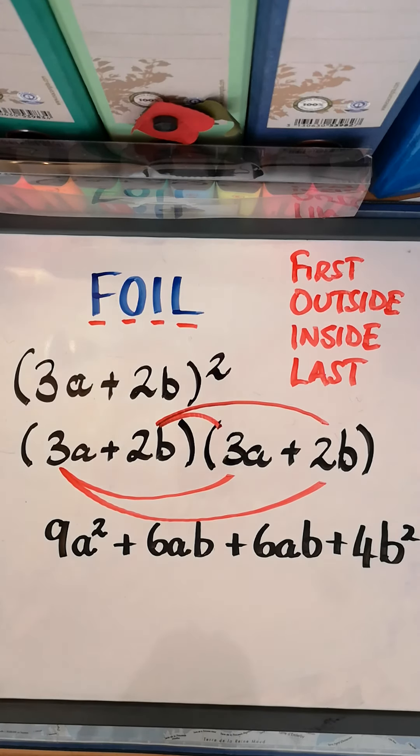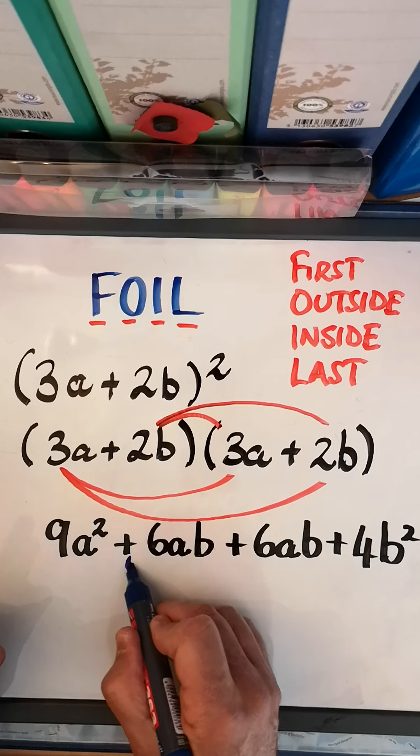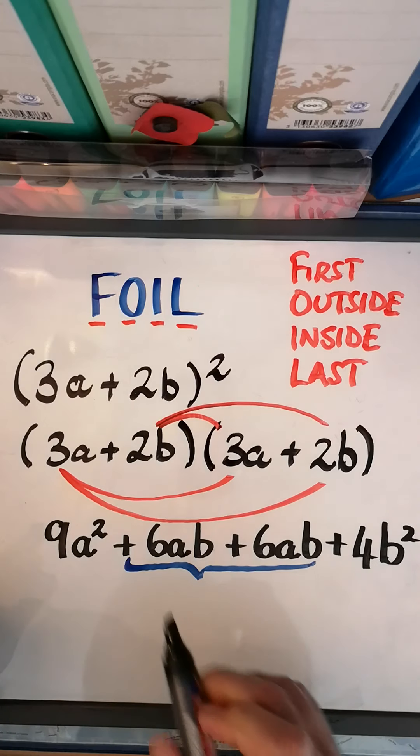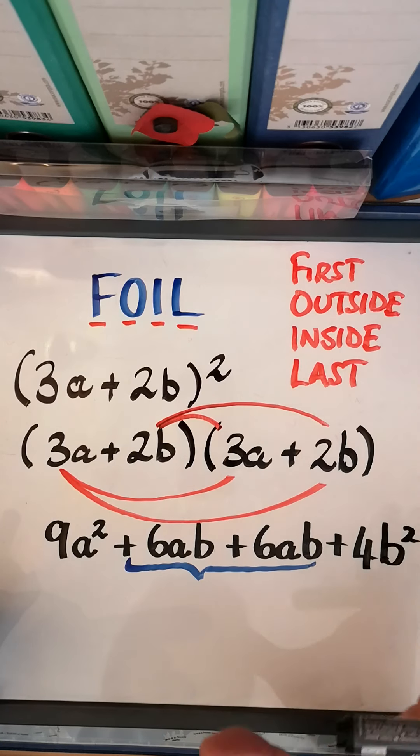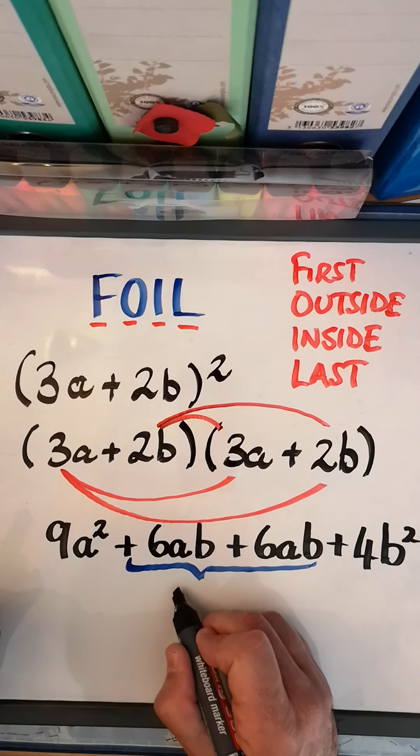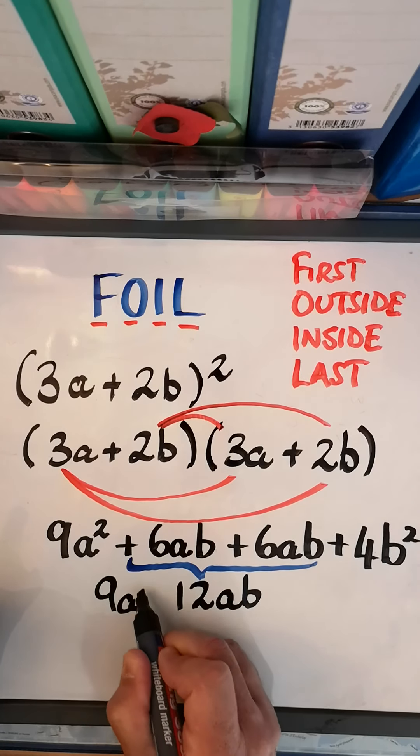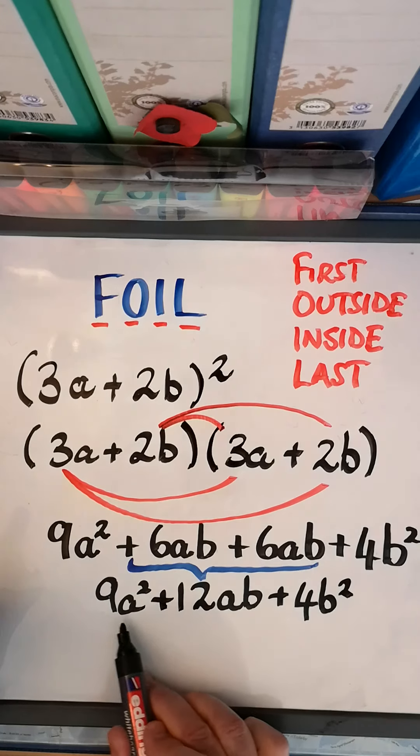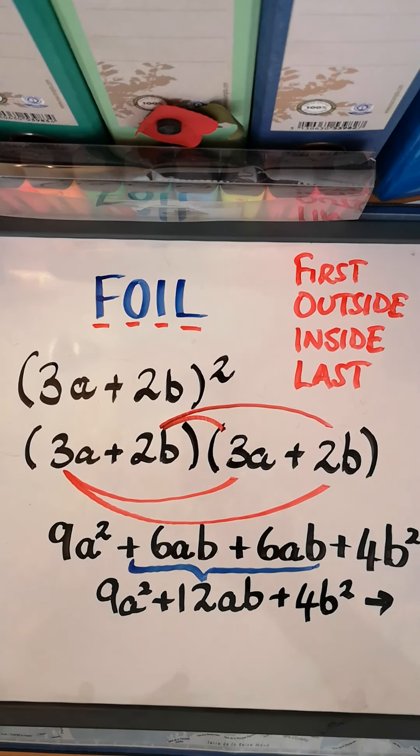Now we're not finished, because when we first started learning about algebra, we spoke about gathering like terms - things that are the same. Is there anything the same? 6ab and 6ab are the same, so we're going to put them together. What is 6ab plus another 6ab? That's 12ab. Now bring in these: 9a² + 12ab + 4b². Any more like terms? No. That then is my answer.